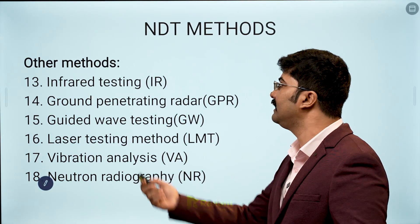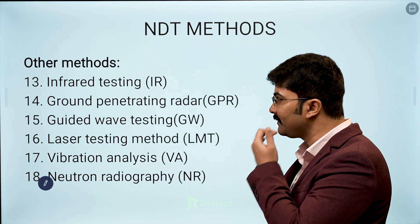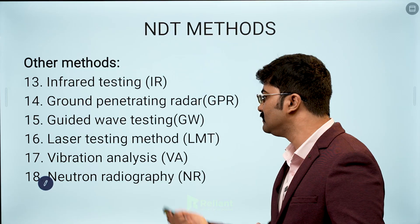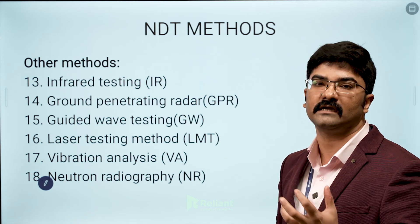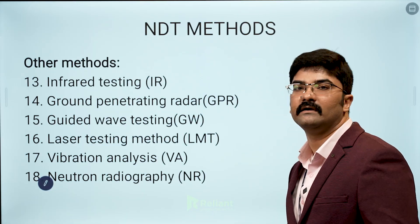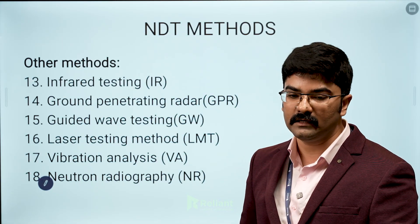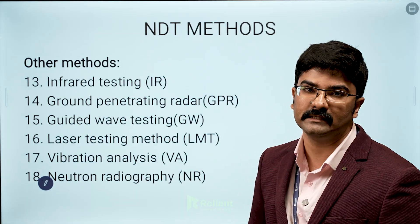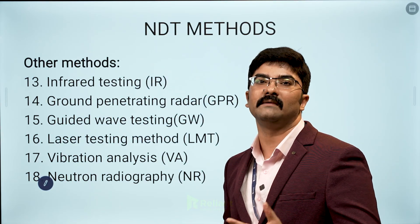Other methods include infrared thermography, ground penetrating radar testing, guided wave testing, laser testing, and vibration analysis — mainly used in bridge construction or structural projects by design engineers. We also have neutron radiography, where instead of X-ray and gamma ray, we use neutrons injected into the material and collect and evaluate the results to find where defects are present. That brings us to about 18 methods. Another one is electromagnetic testing.